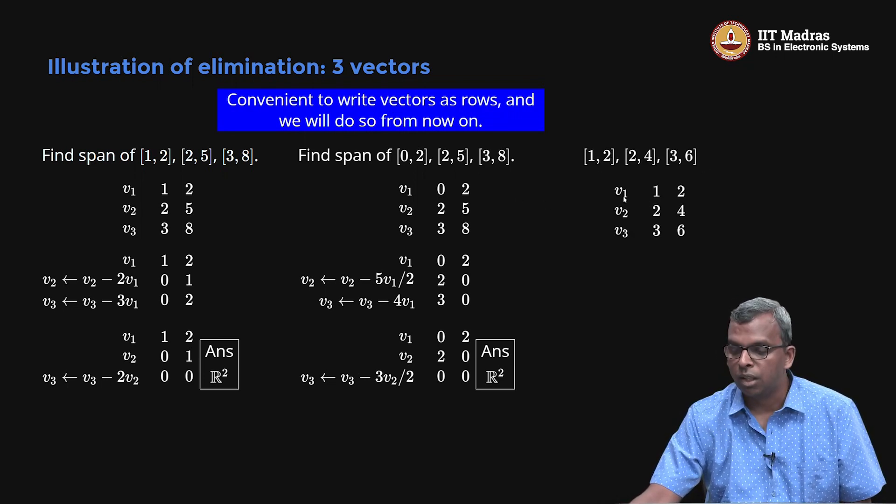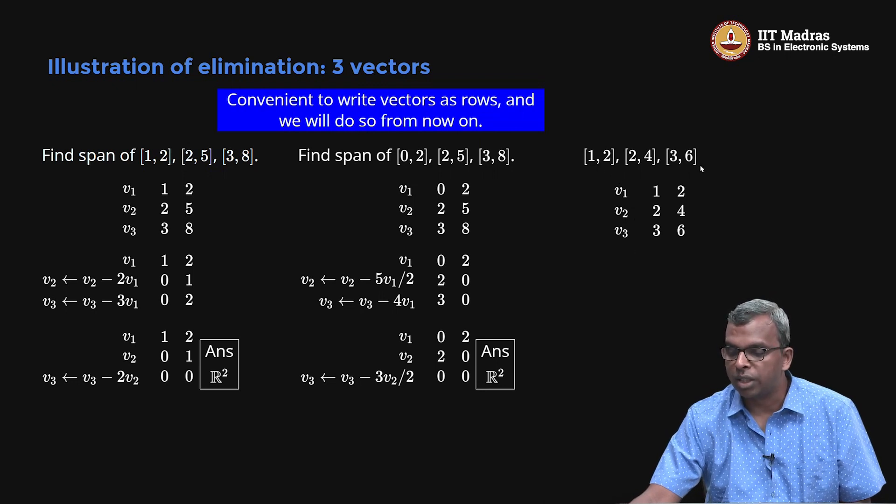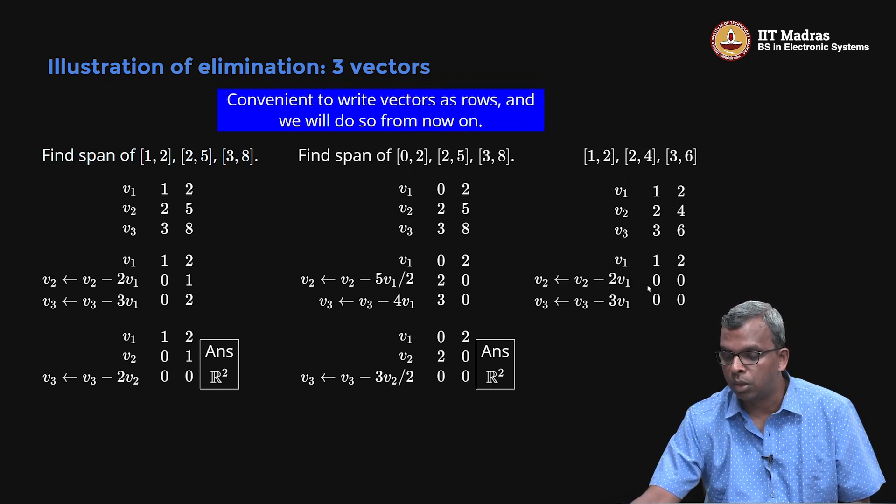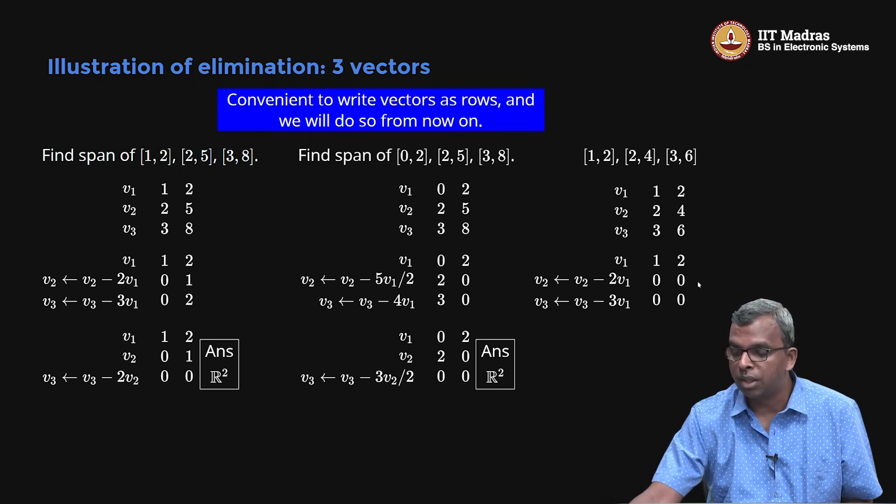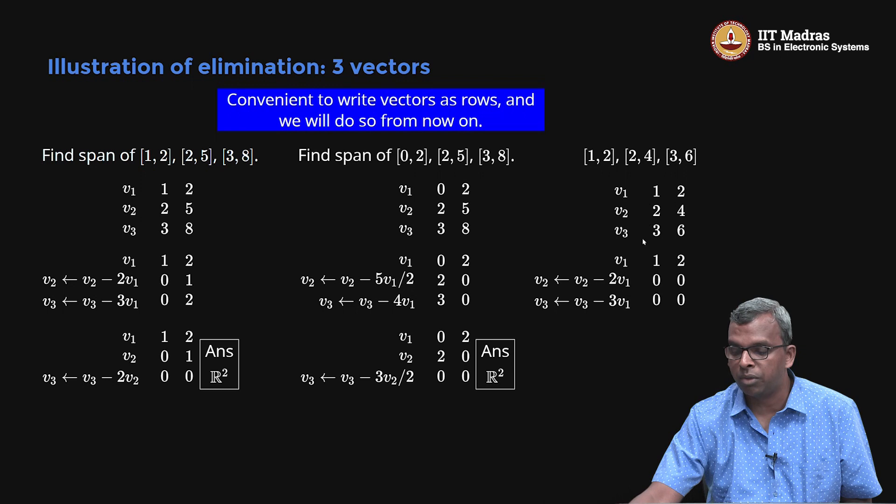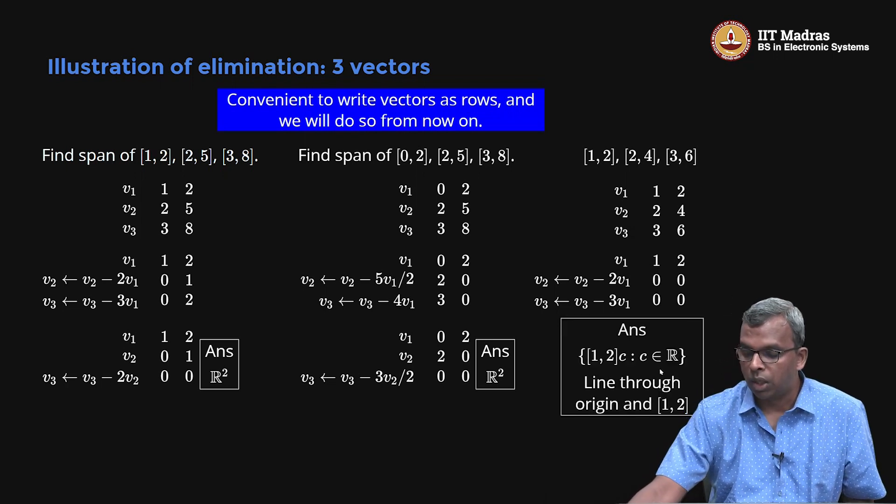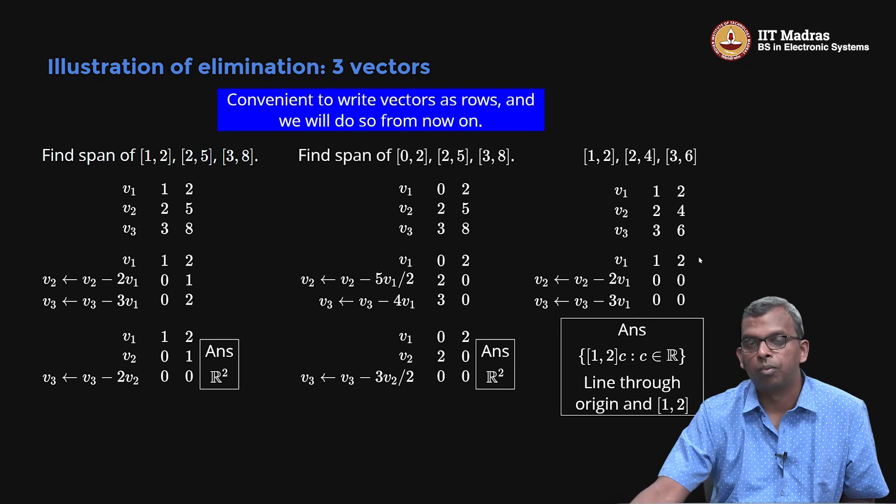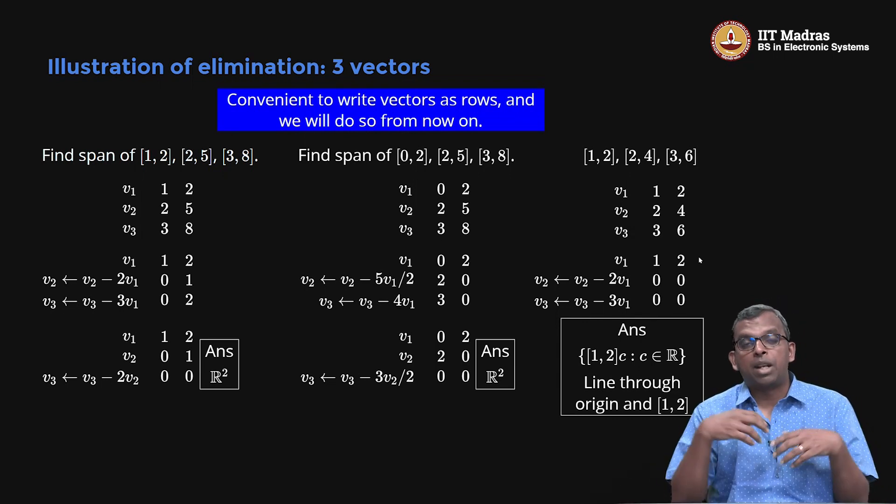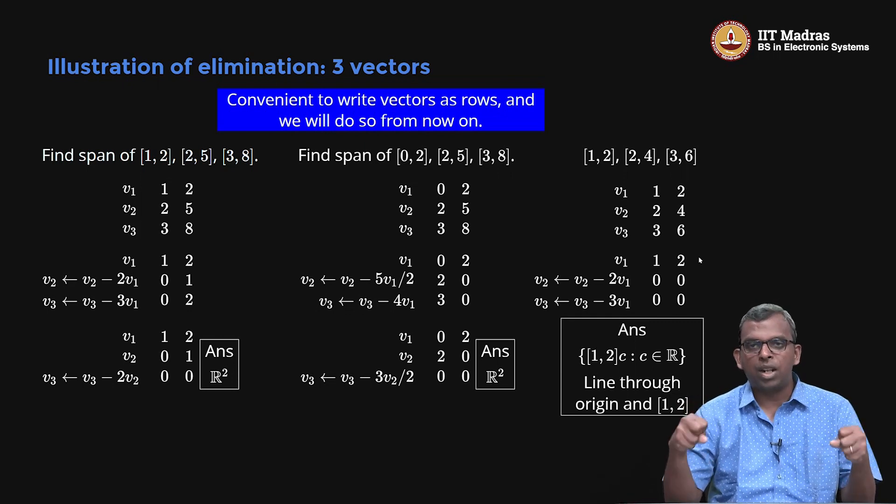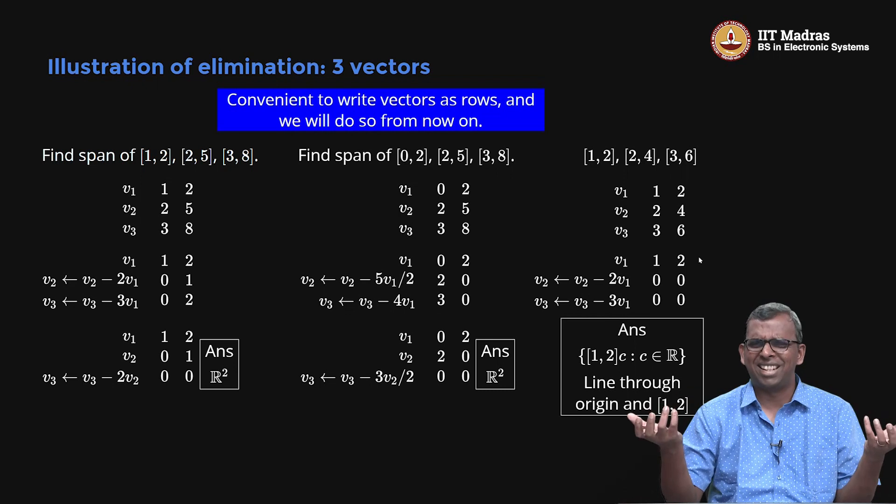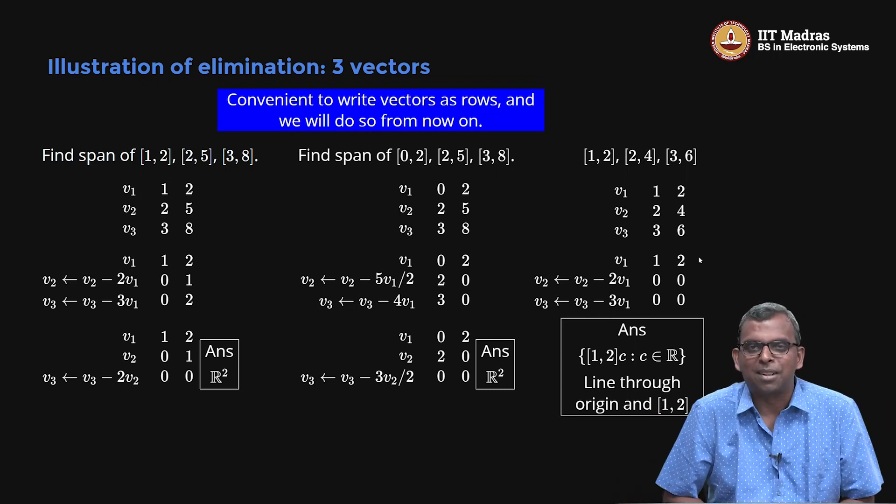Here is one more example: 1, 2, then 2, 4, then 3, 6. This is also actually quite easy. You write down 1, 2, then 2, 4, then 3, 6 like this and you eliminate here. This 1 is here, so you eliminate to make it 0 and guess what you see? You get 1, 2, then 0, 0, then 0, 0. You do V2 minus 2V1, V3 minus 3V1, you get 2, 4 just goes off to 0, 0, and 3, 6 also goes off to 0, 0. So you end up getting only one vector. The 0, 0 do not play any role in the span, only 1, 2 is there, so you get 1, 2 into C which is line through origin and 1, 2. So notice once again when you go to span of 3 vectors, elimination is helping you and again you are getting either a line through the origin or R². You are not getting anything else as long as you have non-zero vectors.